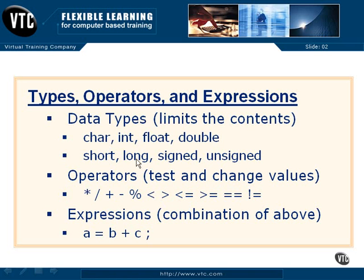You can also have shorts, longs, signed, and unsigned. Shorts and longs relate to integers — they determine how many bits are in the integer, and what the largest and most negative number is that you can hold in that variable. An unsigned cannot go negative; it can be zero or a positive value. A signed, which is the default if you just make an integer, can go negative. A character works the same way — you can have a negative character. We'll look at those minimum and maximum values as we go through this.